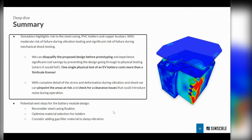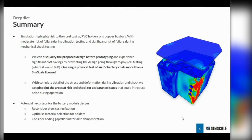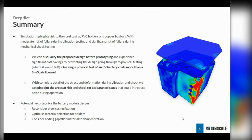I've highlighted a few potential next steps for the battery model's design. We can reconsider the steel casing fixation, because we saw a lot of stress building up around those fixation areas — thinking of a different clamping strategy could be one simple step to improve this design. We can optimize material selection, maybe use a slightly stiffer or softer material, and see how that affects the peak stresses in the PVC holders and the copper bus bars. We can also consider adding gap filler material — the sort of foam that you press into tight spaces to damp out vibration — or different types of rubbers to actually damp out vibration and reduce those peak stresses.